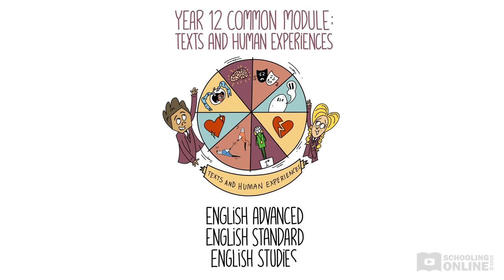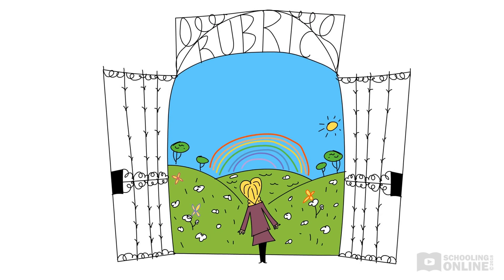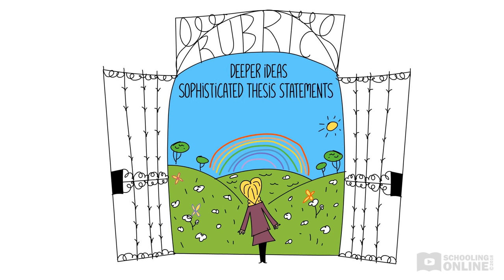Standard and English Studies courses. Knowing the rubric is the key to acing English. When you know the rubric inside out, you will be ready to identify deeper ideas in texts, create sophisticated thesis statements in your essays, and analyse unseen texts for reading comprehension in Paper 1.